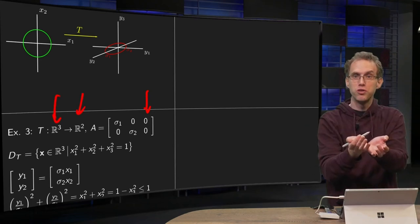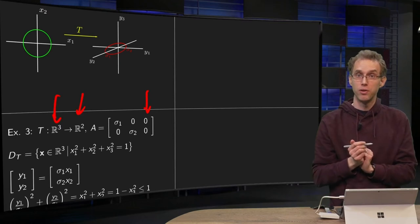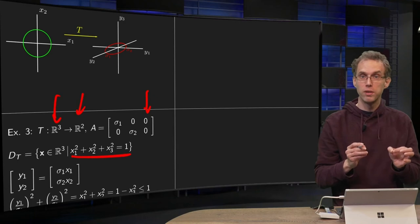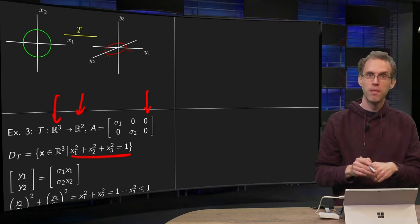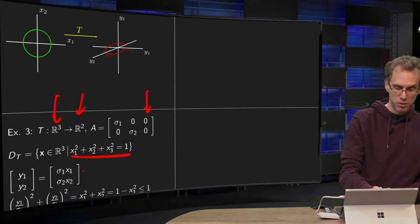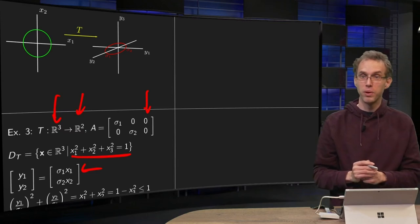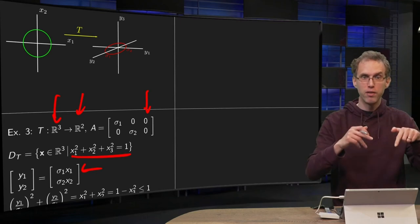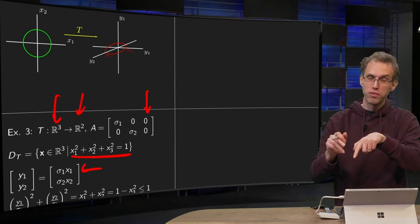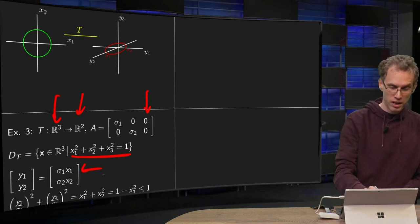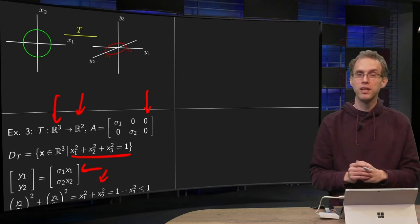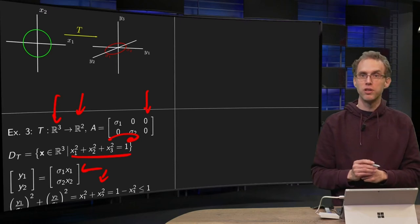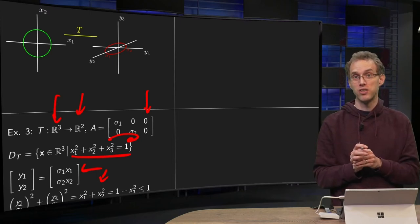Notice that you now have a transformation from R^3 to R^2. So you start with the unit sphere, what happens with our unit sphere? We know x_1^2 + x_2^2 + x_3^2 = 1. Now again we get y_1 = sigma_1 x_1 and y_2 = sigma_2 x_2. So we have (y_1/sigma_1)^2 + (y_2/sigma_2)^2 = x_1^2 + x_2^2. But now this is equal to, you can put the x_3^2 to the other side, this is equal to 1 - x_3^2.